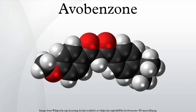Avobenzone is sensitive to the properties of the solvent, being relatively stable in polar protic solvents and unstable in non-polar environments. When irradiated with UVA light, it generates a triplet excited state in the keto form, which can either cause the avobenzone to degrade or transfer energy to biological targets and cause deleterious effects.